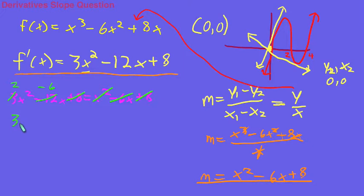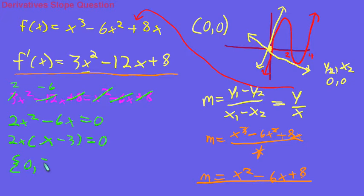And this will give us 2x² - 6x = 0, and we're going to factor a 2x out from that, which will give us 2x(x - 3) = 0. And that will give us factors of 0 and 3. So now let's plug this into our equation and see if this works.